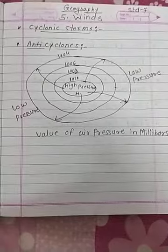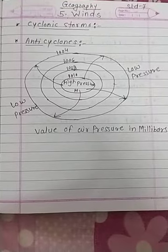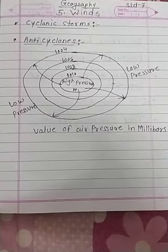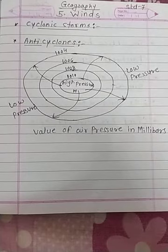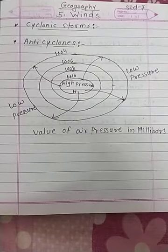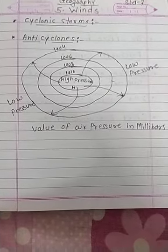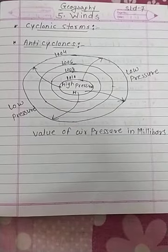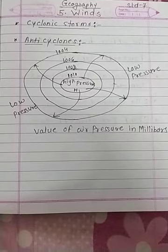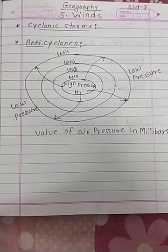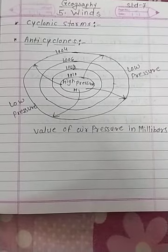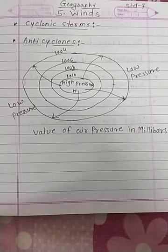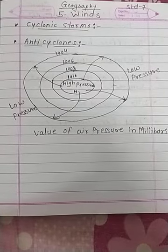Winds blow with a lesser velocity and the weather is pleasant. Anti-cyclones generally last for a few days or a week. Such anti-cyclones originate in the temperate zone. On weather maps, the center of an anti-cyclone is marked by the letter H. Anti-cyclones are very vividly experienced in high pressure belts. Winds in this region are always moving outward and hence the rainfall in such areas is quite low.